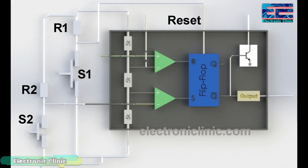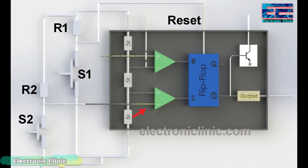Now we will see how the 555 timer IC works in the bistable mode. The reset pin is connected with the middle of R1 and switch S1. While the switch is open, R1 keeps the reset pin at logic level high. The inverting pin of the second voltage comparator is connected with R2 and S2. While S2 is open, the trigger pin is kept high by R2 as it supplies VCC to the inverting pin of the comparator. The non-inverting input of the first voltage comparator is connected with ground, so its output will always be 0.